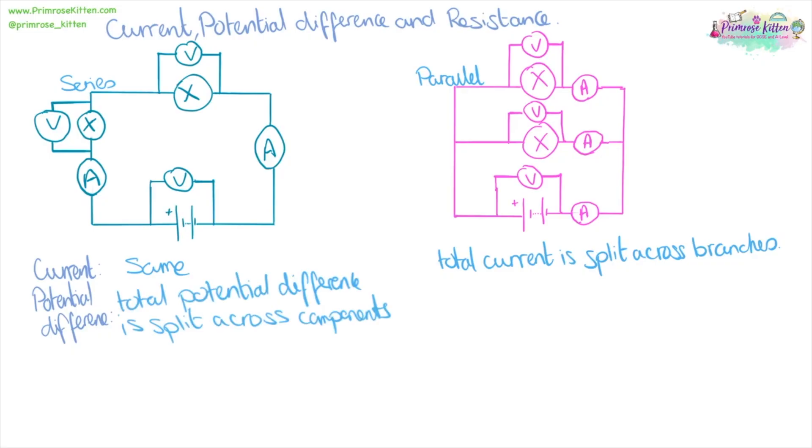Whereas in a parallel circuit, the potential difference that we have here across the battery is the same as we have across each of the branches.